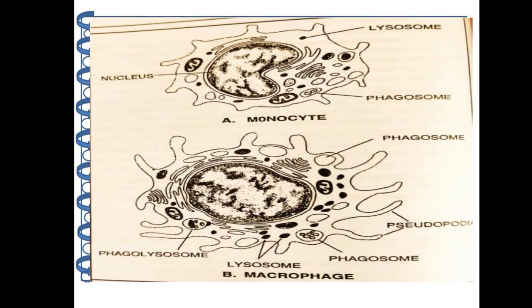These are the pictures of monocytes and macrophages. In both pictures you can see the presence of lysosomes, phagosomes, and a large nucleus.